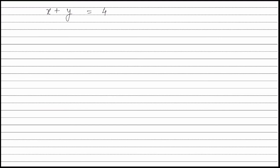According to the question, 40 ml of oxygen was added and the mixture was further exploded. This oxygen reacted with the hydrogen formed to produce H₂O. The reaction is H₂ plus O₂ forming H₂O. The hydrogen formed in the previous step is equal to 20Y, and the oxygen used is 40 ml.